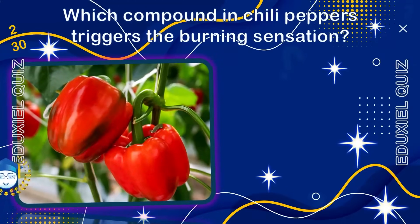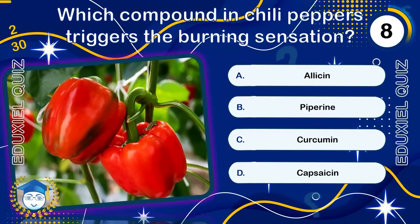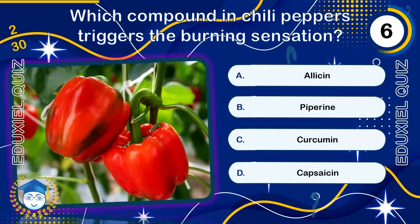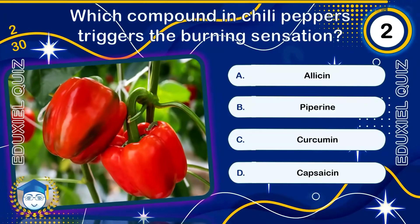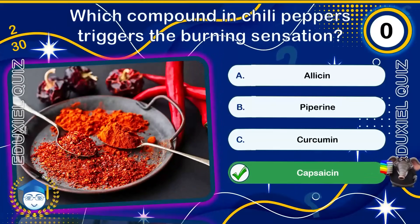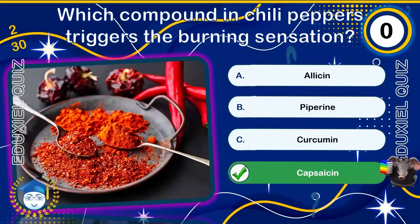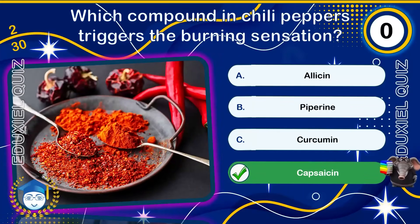Which compound in chili peppers triggers the burning sensation? Capsaicin is the compound that gives chili peppers their spiciness. It binds to TRPV1 receptors in the mouth — the same receptors that sense heat — tricking the brain into feeling a burning sensation. Medicinally, capsaicin creams are used to relieve arthritis and nerve pain.